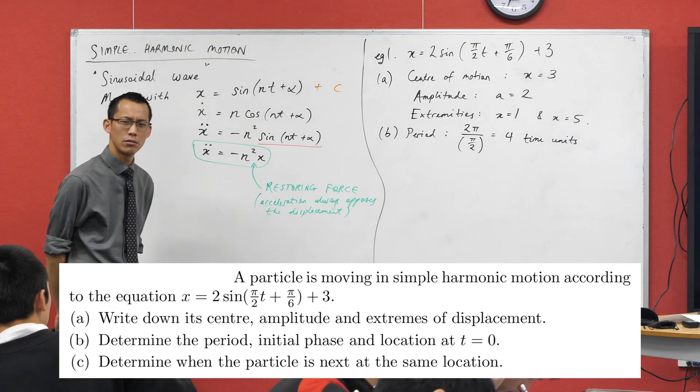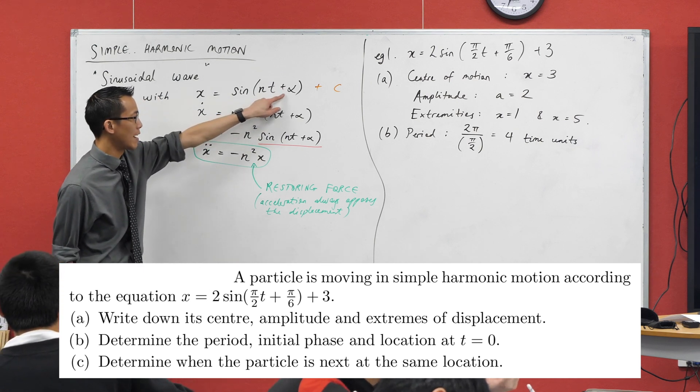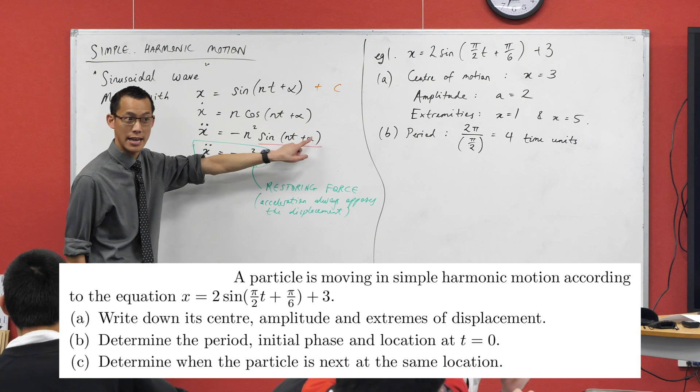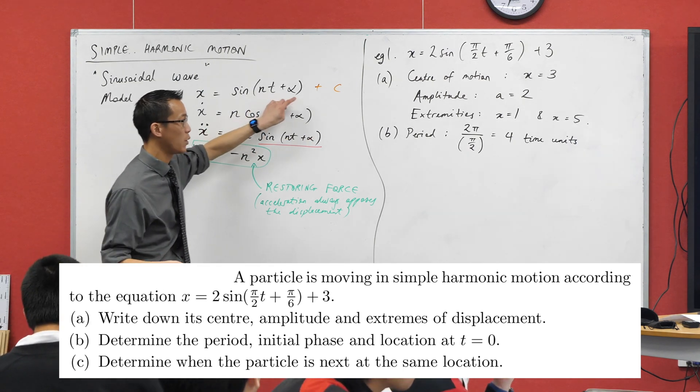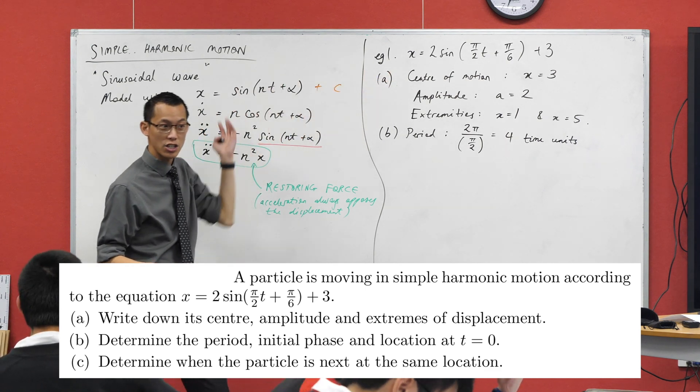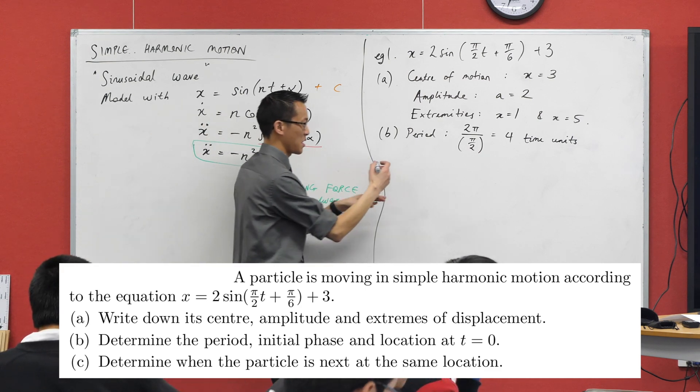What's the next thing they ask for? Initial phase. Now coming back to here, right, you saw me do this, right? I introduced this extra angle in here to say I don't have to start at the origin, I could start anywhere, right? So just like we did with amplitude and very similar to the center of motion as well, I can just read this off. What's the value in this particular one? π on 6. That's it.